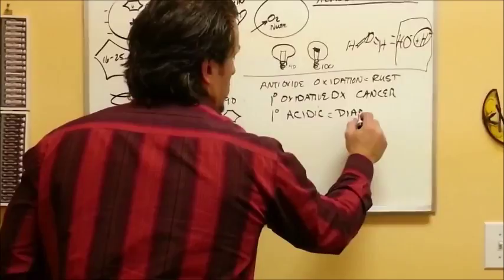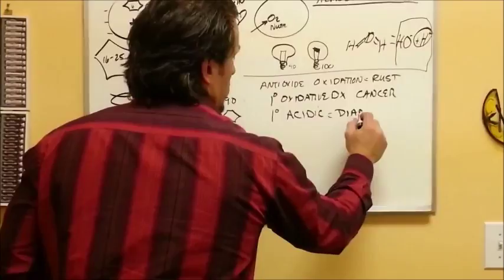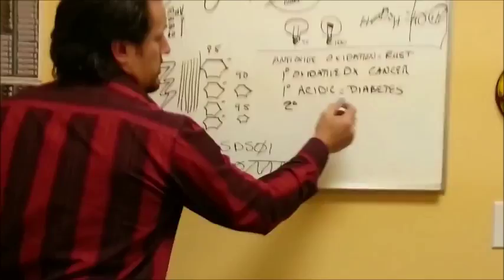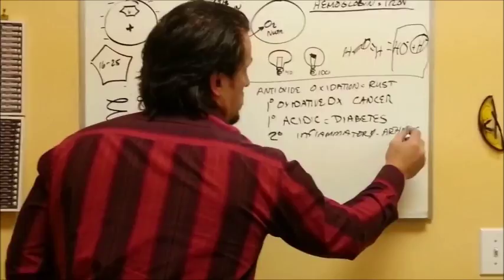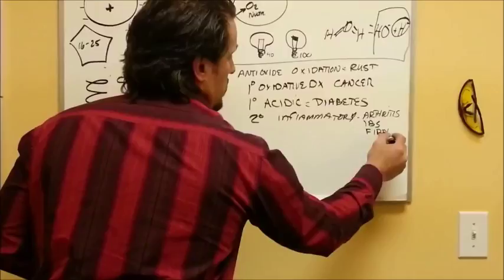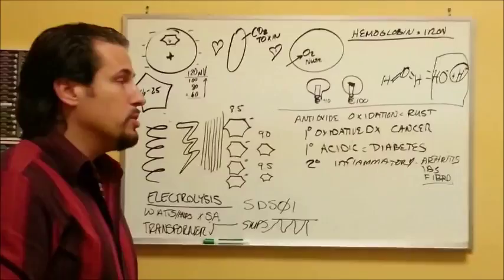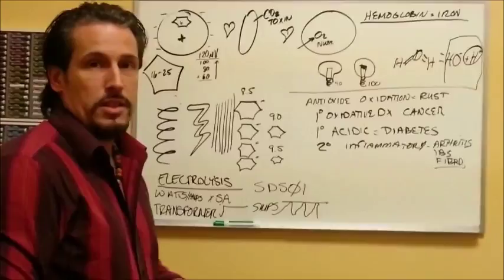Secondarily, the acidic diseases are really associated with all your inflammatory responses. That's your arthritis, your irritable bowel syndrome, fibromyalgia, things like that. All of those autoimmune or inflammatory, highly aggressive diseases are based on acidic responses because there's a rapid oxidative process that's creating the stress.